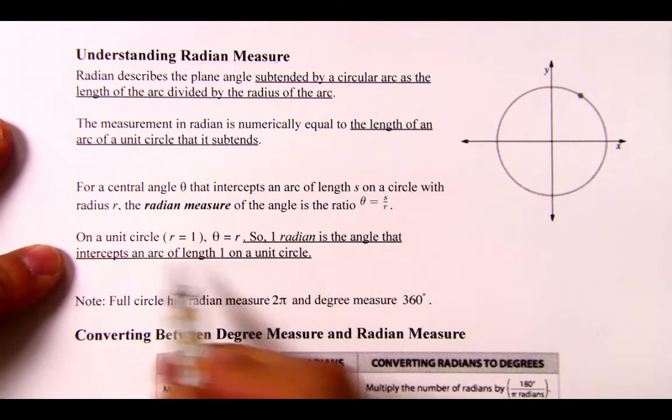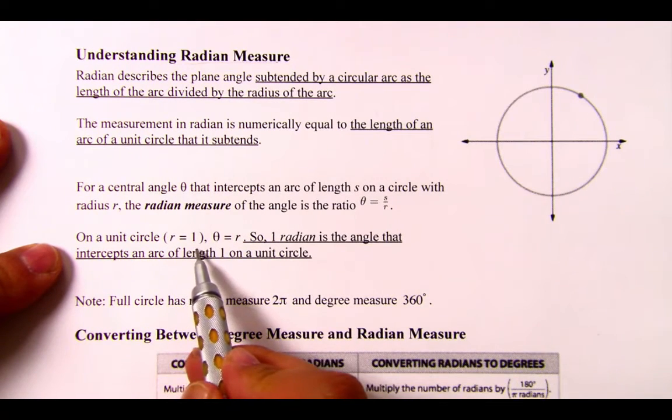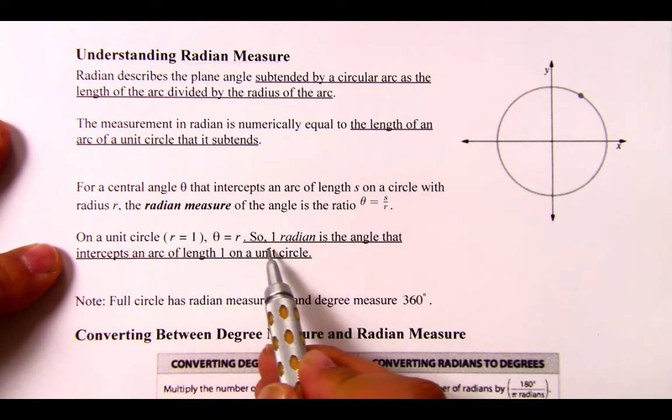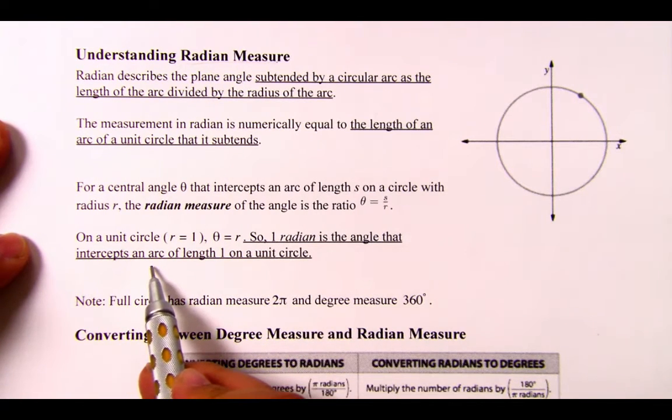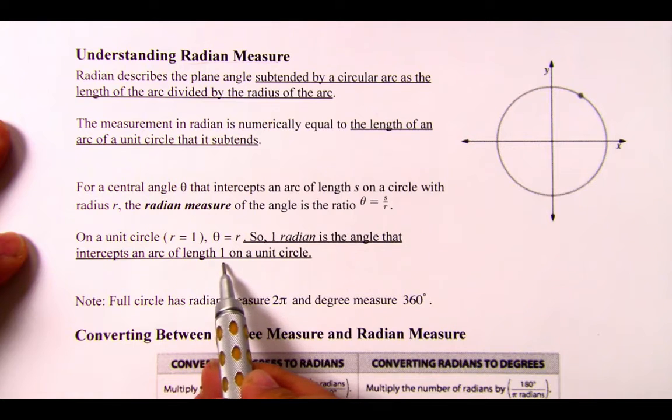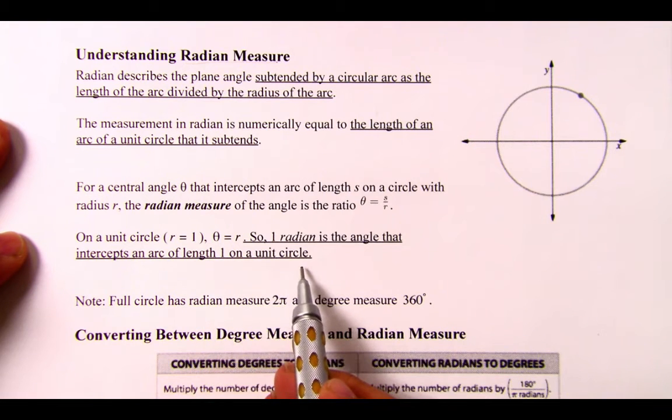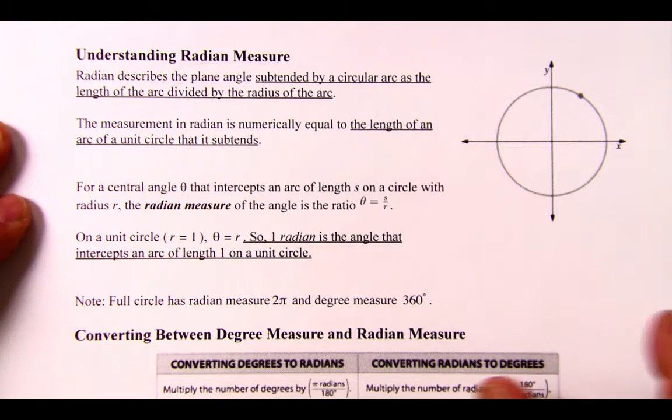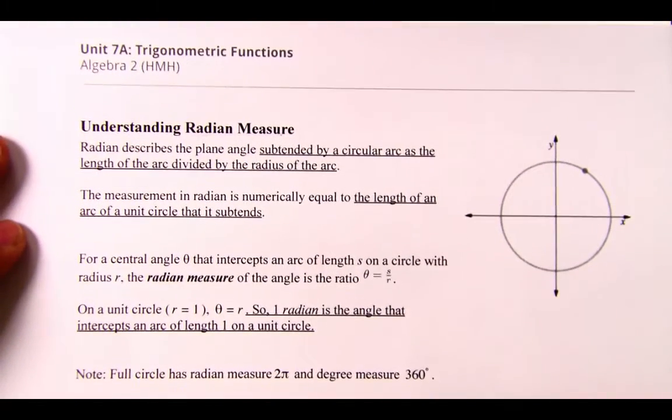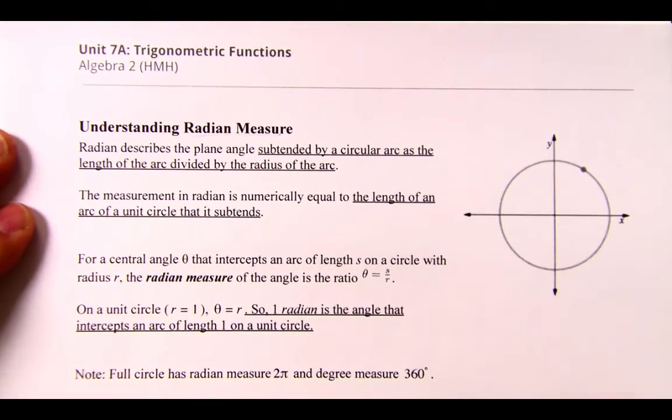And this part right here: on a unit circle, r equals 1, theta is r. So one radian is the angle that intercepts an arc of length 1 on a unit circle. So there's a lot of words here, but they actually are talking about the same thing.